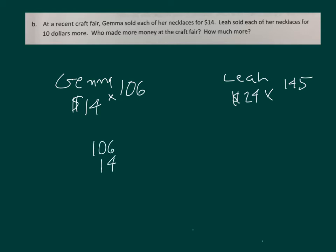Work it out. Show me standard algorithm. 4 times 6 is 24, 4, regroup a 2. 4 times 0 is 0, plus 2 is 2. 4 times 1 is 4, place a 0, 6, 0, 1. Adding that together, we would get Gemma's amount, which is $1,484.